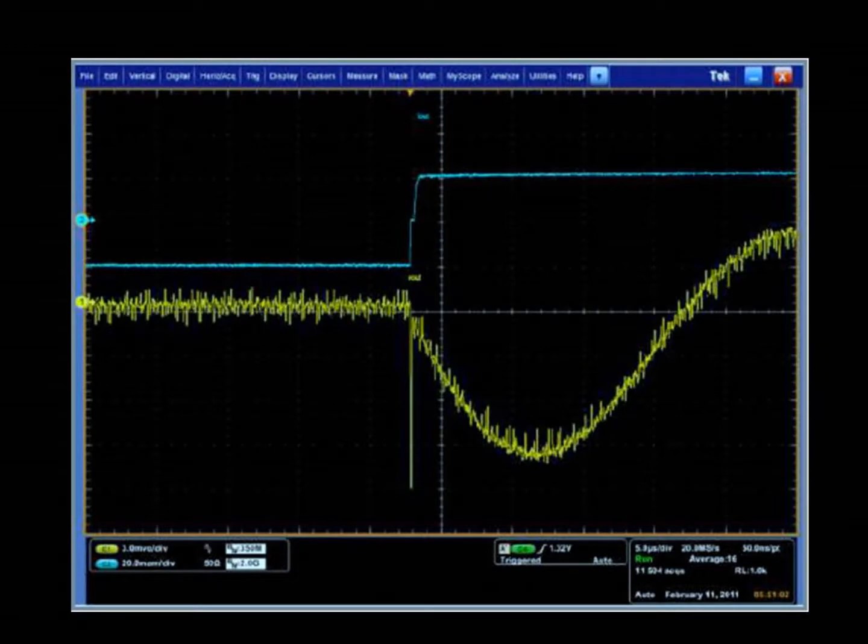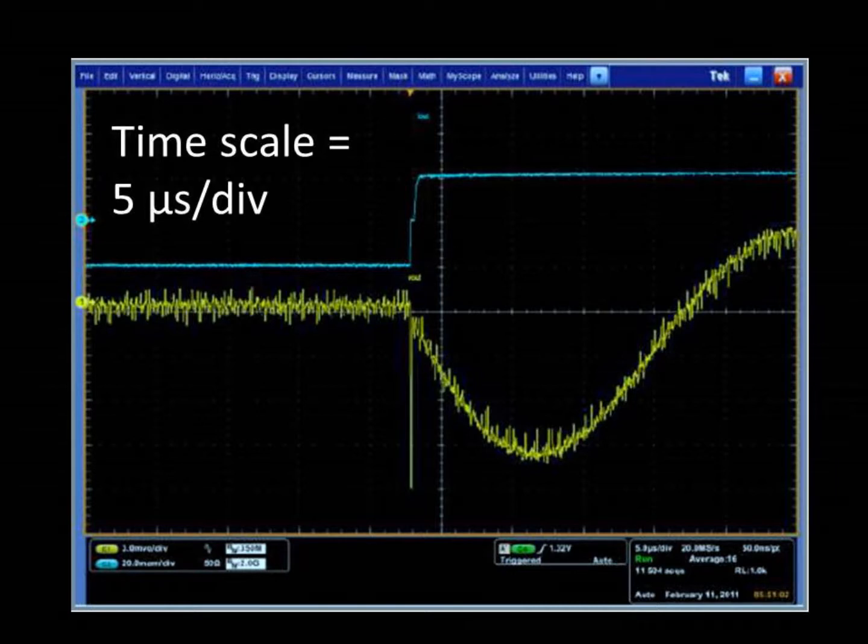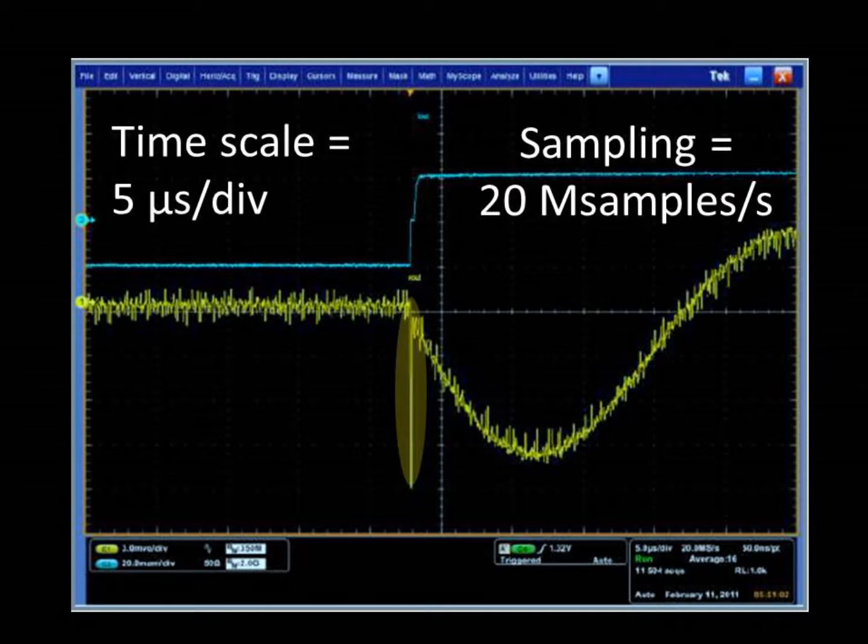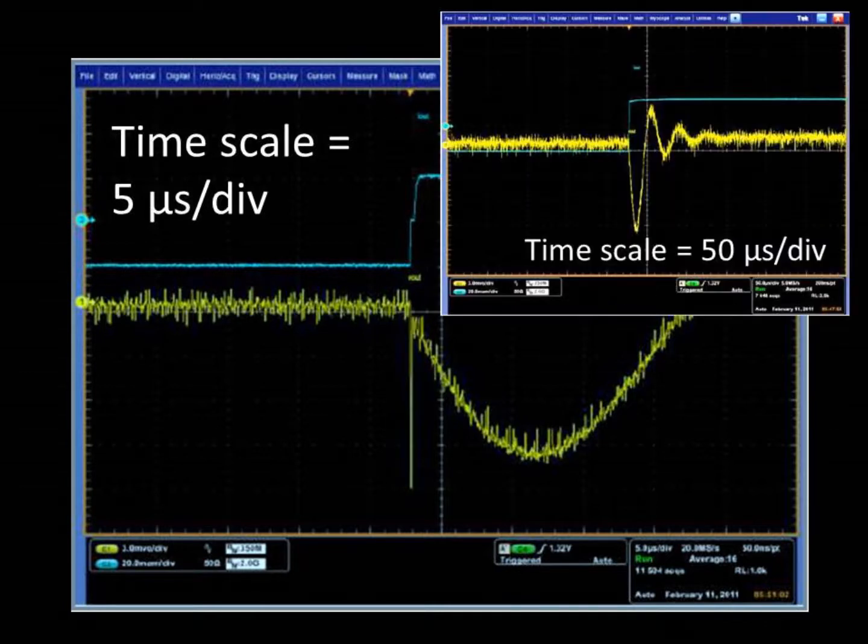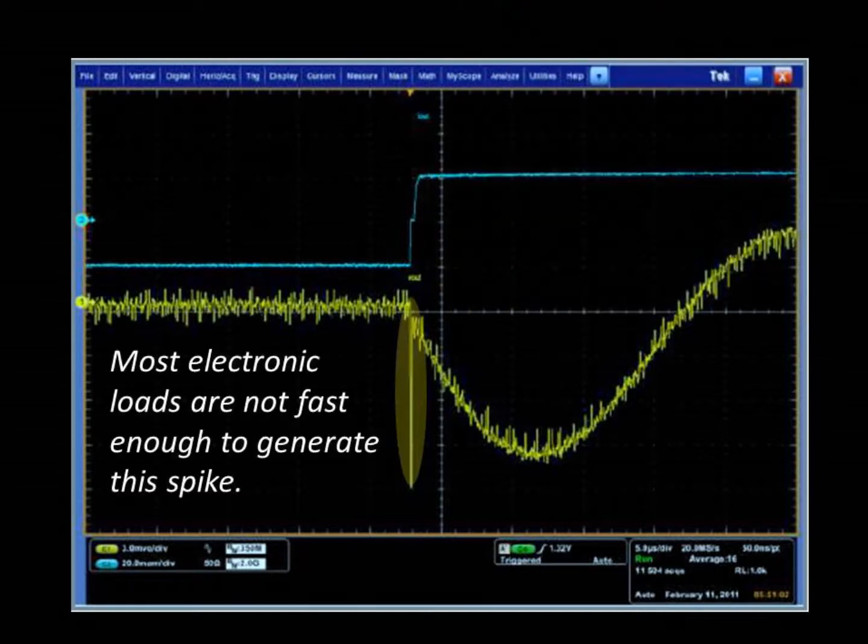However, this is the same image at a different time scale of 5 ms per division at a 20 ms per second sample rate. The LDI-DT spike is a bigger concern than the ringing, and this spike wasn't even evident in the previous screenshot. In fact, if this load step was performed with an electronic load, it would still likely not be evident due to the slow rise and fall times of the electronic load.